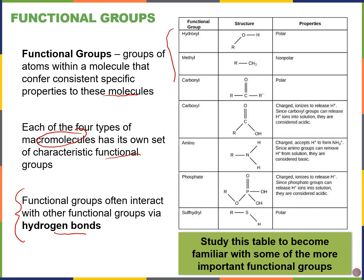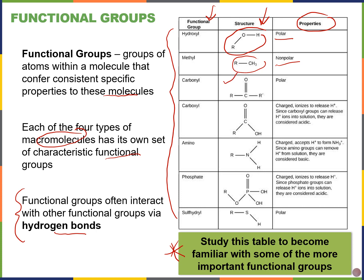These are the functional groups I would like you to know — please be familiar with them, as you're going to see them over and over again in our course. For each, you should be able to name it, draw it, and tell me the basic properties shown in this table. For example, the hydroxyl functional group is polar — and remember, polar means it's water-loving, hydrophilic. Methyl is non-polar. We also have a carbonyl group, carboxyl group, and others. We'll go over them again in Chapter 3 and future chapters.